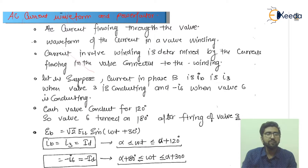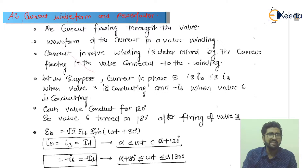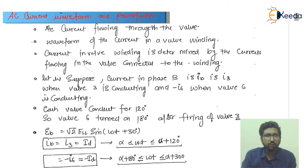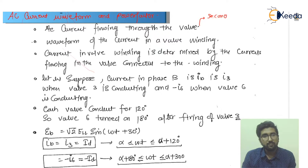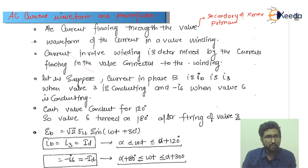We have discussed the DC waveform and the DC voltage waveform derivation. Now we will talk about the AC current waveform. The AC current is flowing through the coil (wall), which is connected to the secondary of the transformer. The primary of the transformer contains harmonics.